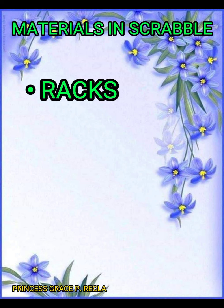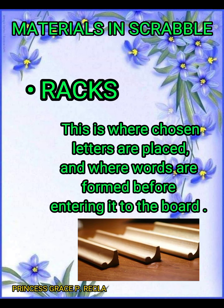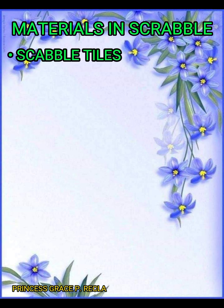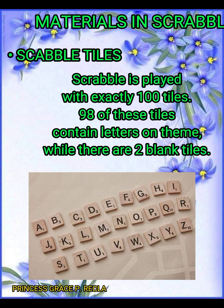Second, the rack. This is where chosen letters are placed and where words are formed before placing them on the board. Third, Scrabble tiles. Scrabble is played with exactly 100 tiles. Ninety-eight of these tiles contain letters on them, while there are two blank tiles.